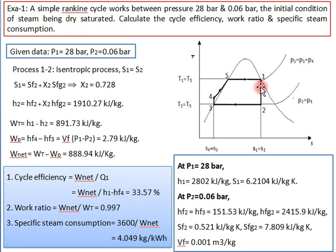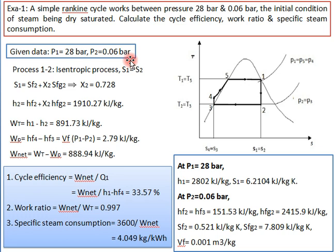Two pressure values are given and the steam condition is dry saturated, which is why it starts from the saturation curve at point 1. P1 is 28 bar and P2 is 0.06 bar.